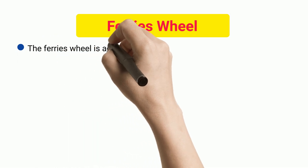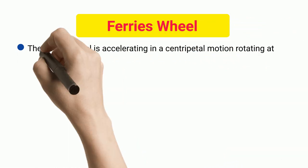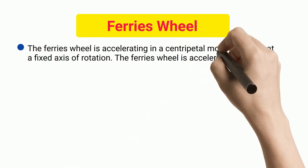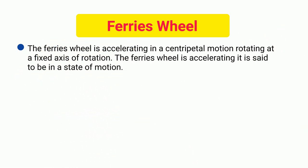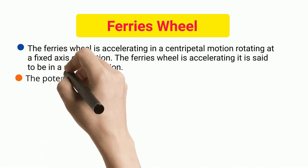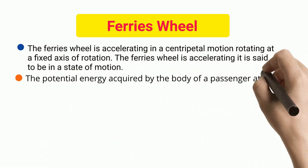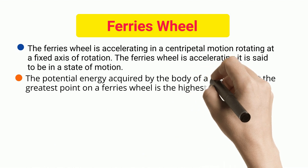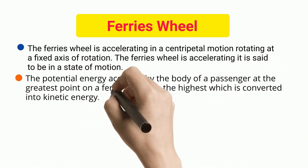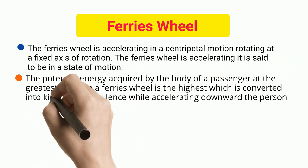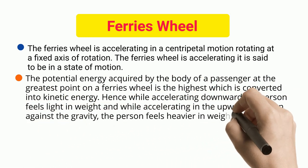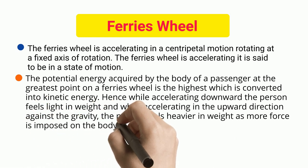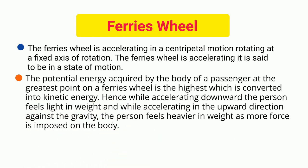Ferris Wheel. The ferris wheel is accelerating in a centripetal motion, rotating at a fixed axis of rotation. The ferris wheel is accelerating, it is said to be in a state of motion. The potential energy acquired by the body of a passenger at the greatest point on a ferris wheel is the highest, which is converted into kinetic energy. Hence, while accelerating downward, the person feels light in weight, and while accelerating in the upward direction against gravity, the person feels heavier in weight as more force is imposed on the body.